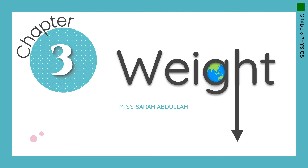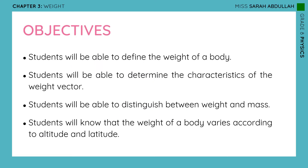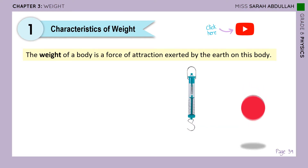Hello Grade 8, this week we are starting a new chapter — Chapter 3 called Weight. We already have an idea about weight, so let's talk about it more. The first two objectives you already know from the previous chapter, but you will be able to distinguish between weight and mass, and you will know that the weight of a body varies according to altitude and latitude. We're also going to talk about the relation between weight and mass.